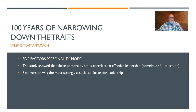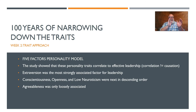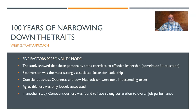Extroversion was the most strongly associated factor for leadership — that ability to step out, be noticed, and be seen. If you don't feel you're an extrovert, that's something to consider when seeking a leadership position. But correlation does not equal causation — it doesn't mean you have to be extroverted; it just means there's a correlation between extroversion and landing a leadership job. You can overcome it. Conscientiousness, openness, and low neuroticism were next in descending order. Agreeableness was only loosely associated — you don't have to be everybody's buddy to be an effective leader.